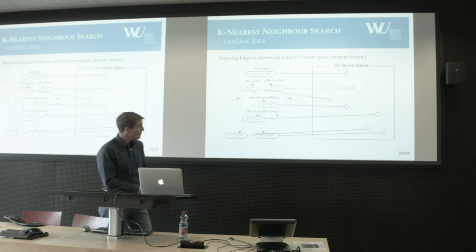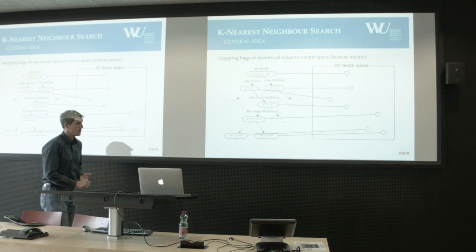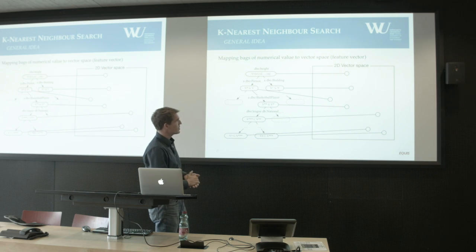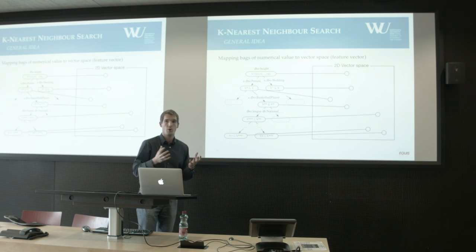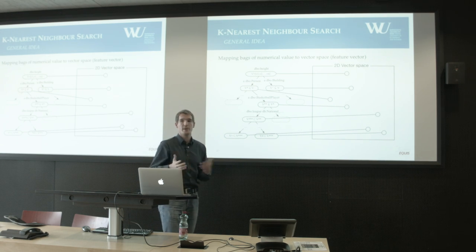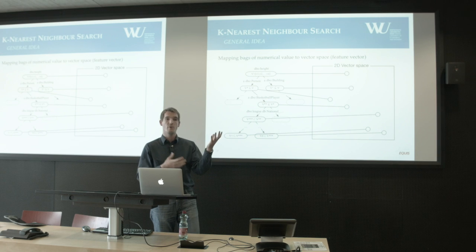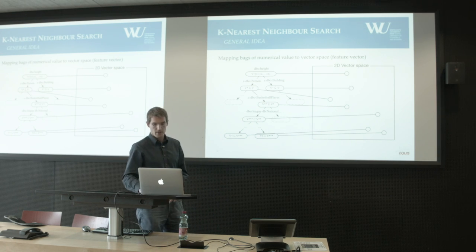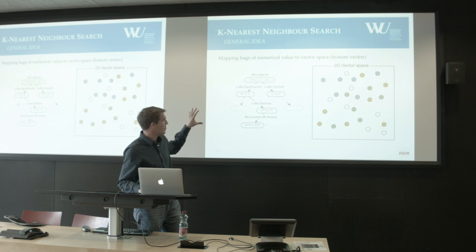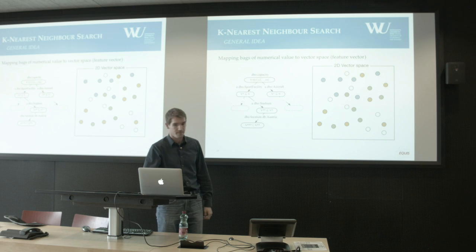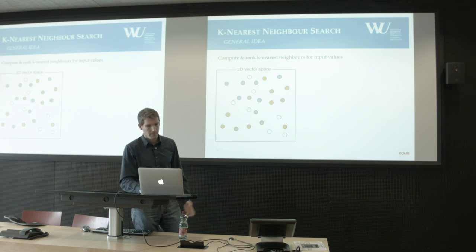We take all nodes and represent them as points in a vector space. Here, as an example, a two-dimensional vector where the dimensions could be the minimum and maximum of the values. We map all nodes this way for all properties, giving us a number of spaces.